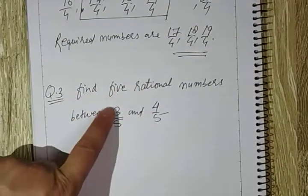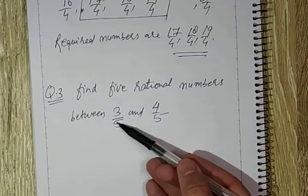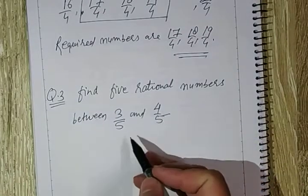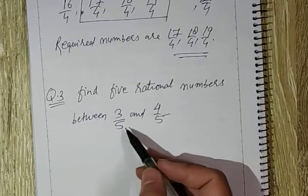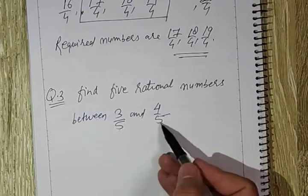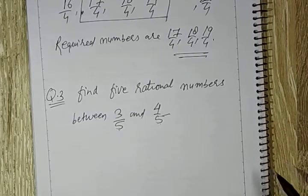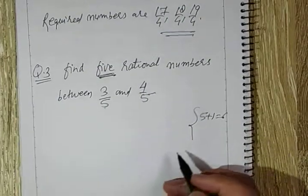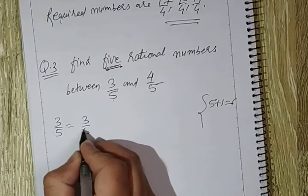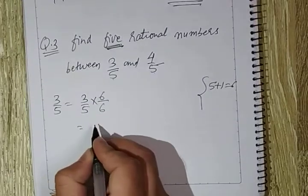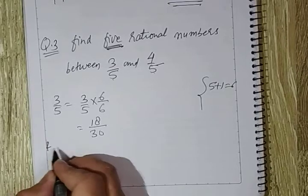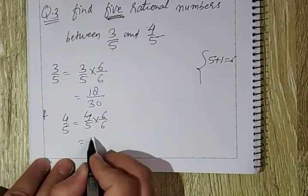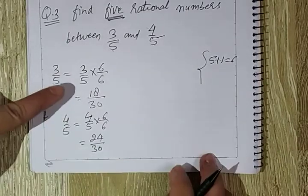Question number three: find 5 rational numbers between 3 upon 5 and 4 upon 5. We see 3 upon 5 and 4 upon 5. Here the numbers are in the form p upon q. An important thing to note is that the denominators of both numbers are the same. If the denominators are the same, we can directly apply the method. We need to find 5 numbers, so 5 plus 1 gives us 6. We multiply 3 upon 5 by 6 in both numerator and denominator: 6 × 3 = 18 and 6 × 5 = 30, giving 18 upon 30. For the other number, 4 upon 5 multiplied by 6 gives 6 × 4 = 24 and denominator 30, so 24 upon 30. So our first bound is 18 by 30.